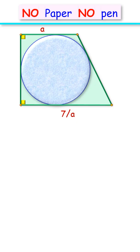In this interesting question, we have a right angle trapezium with a circle inscribed in it. The length of parallel sides is A and 7/A centimeter. Exciting part is with this limited data, without using any paper or pen, we have to find the area of this trapezium.